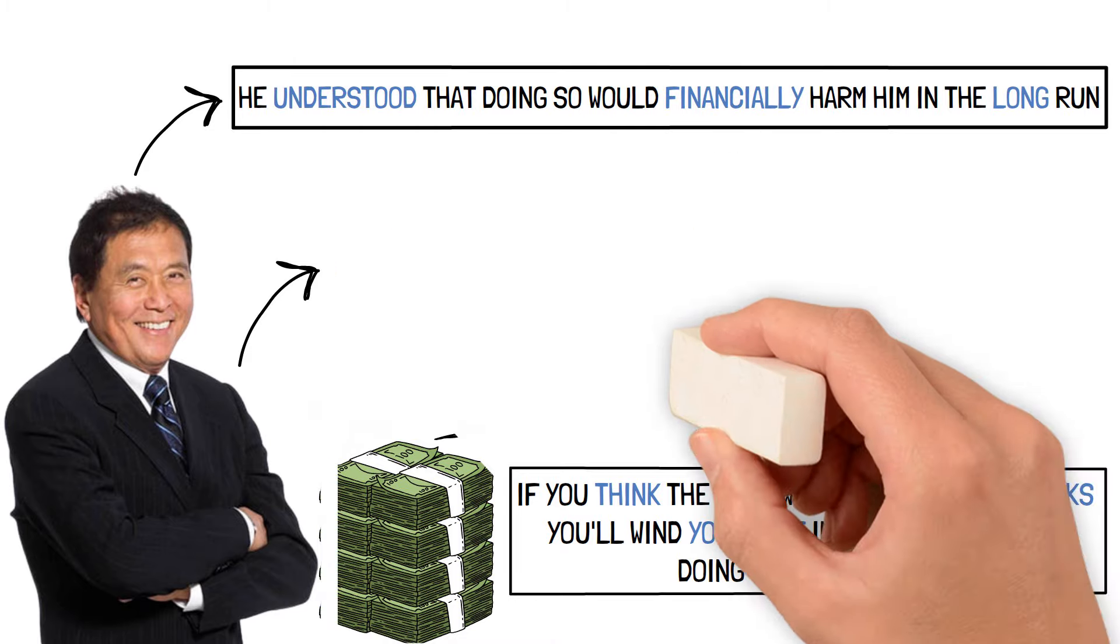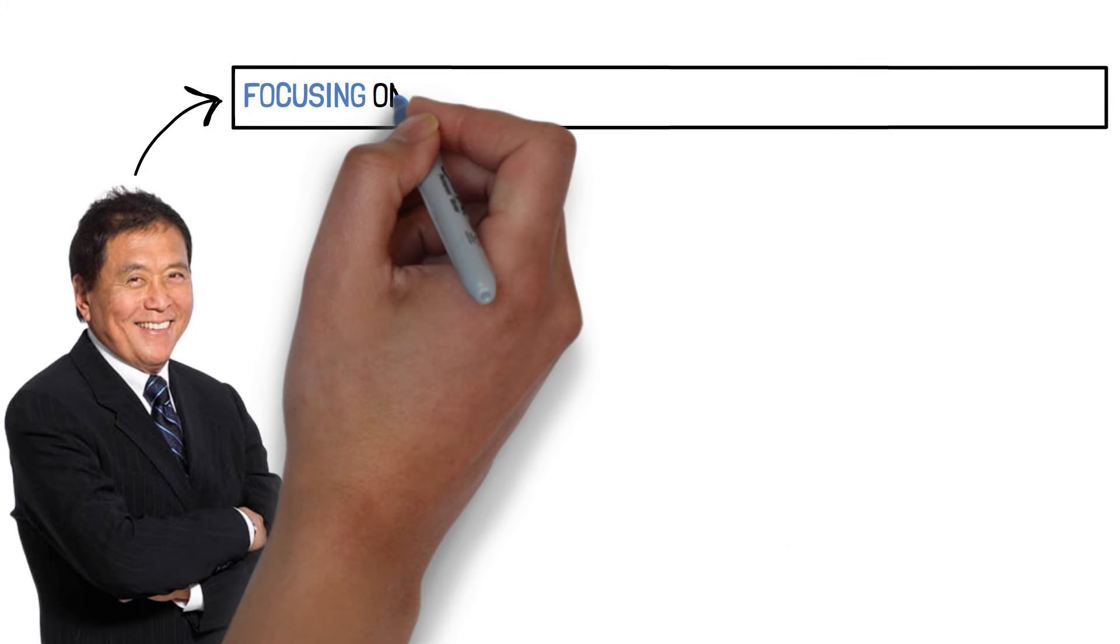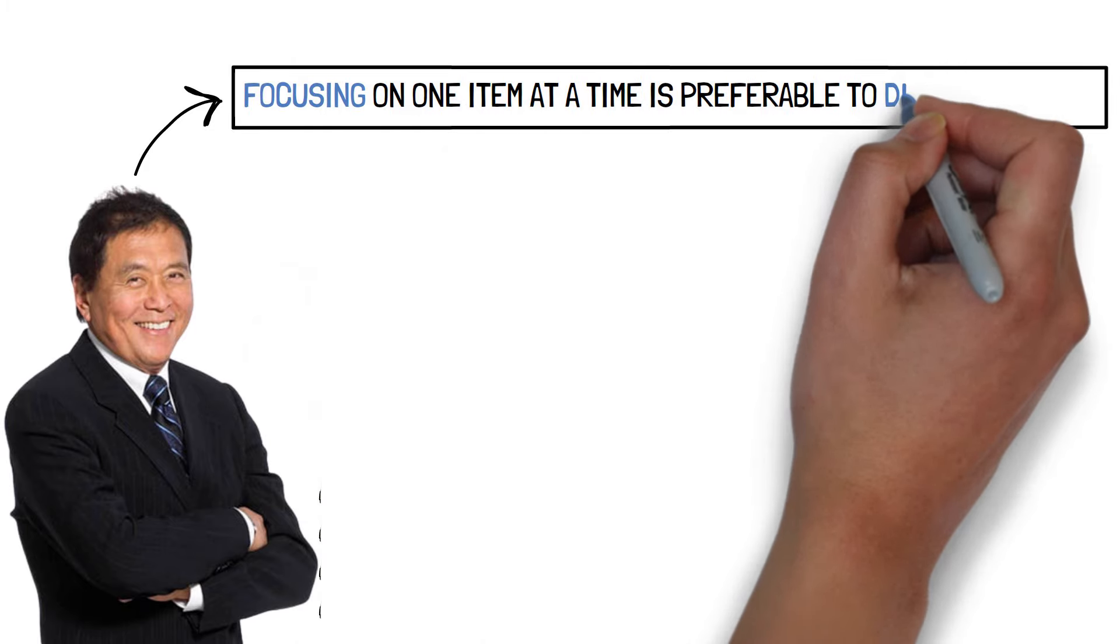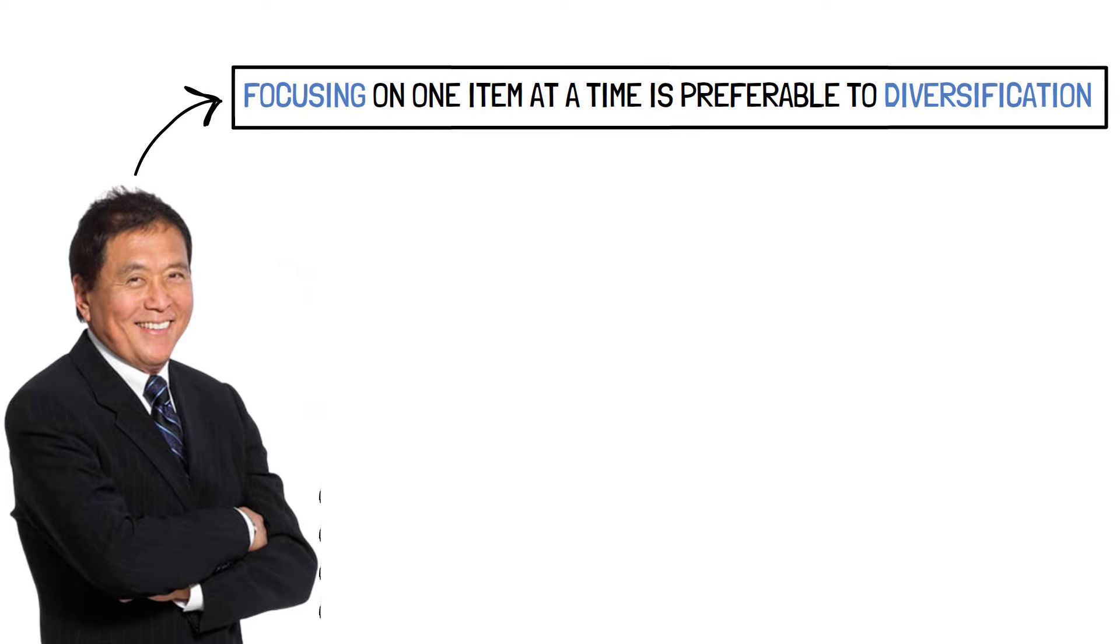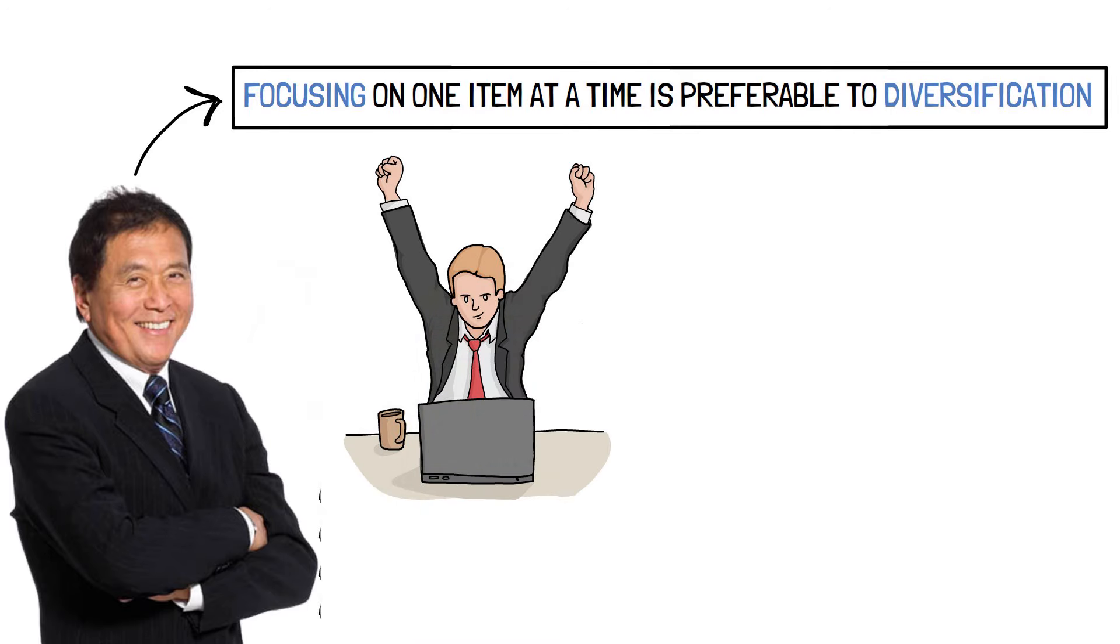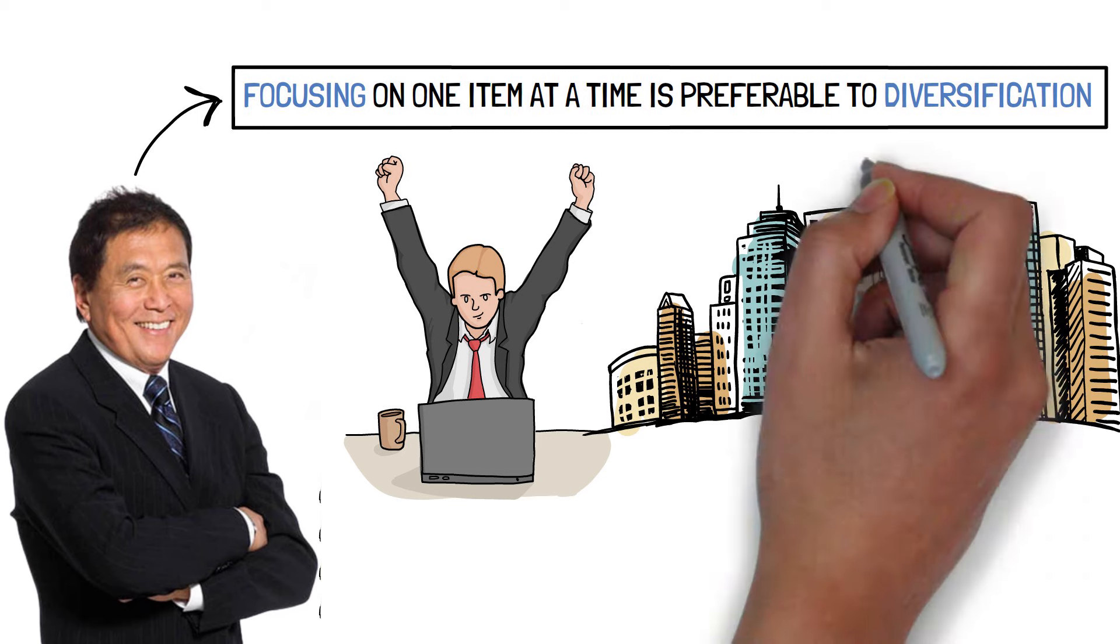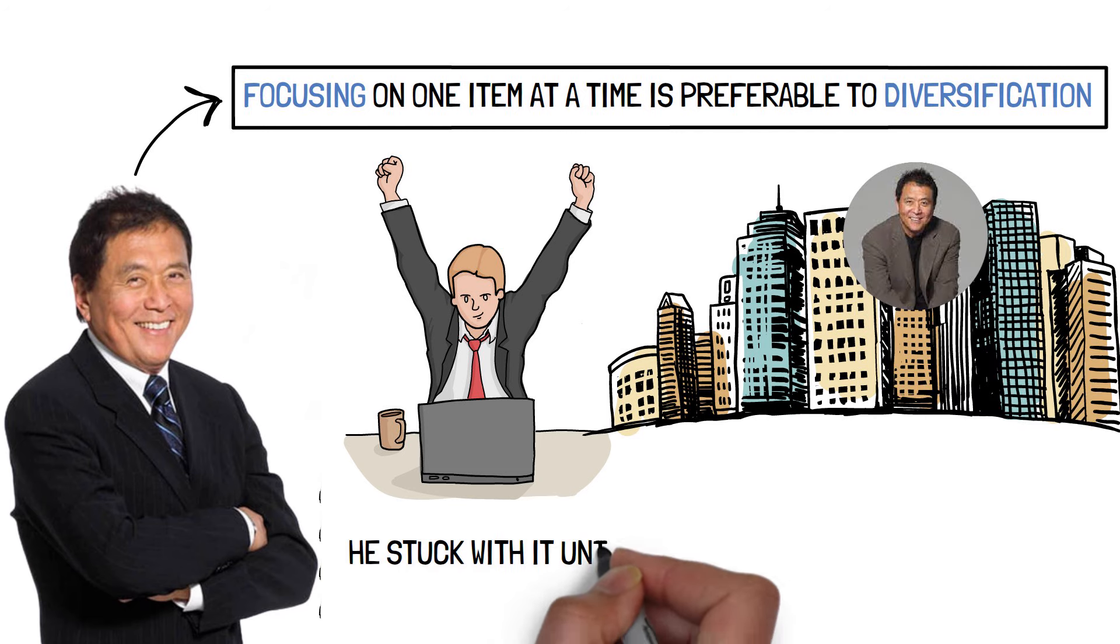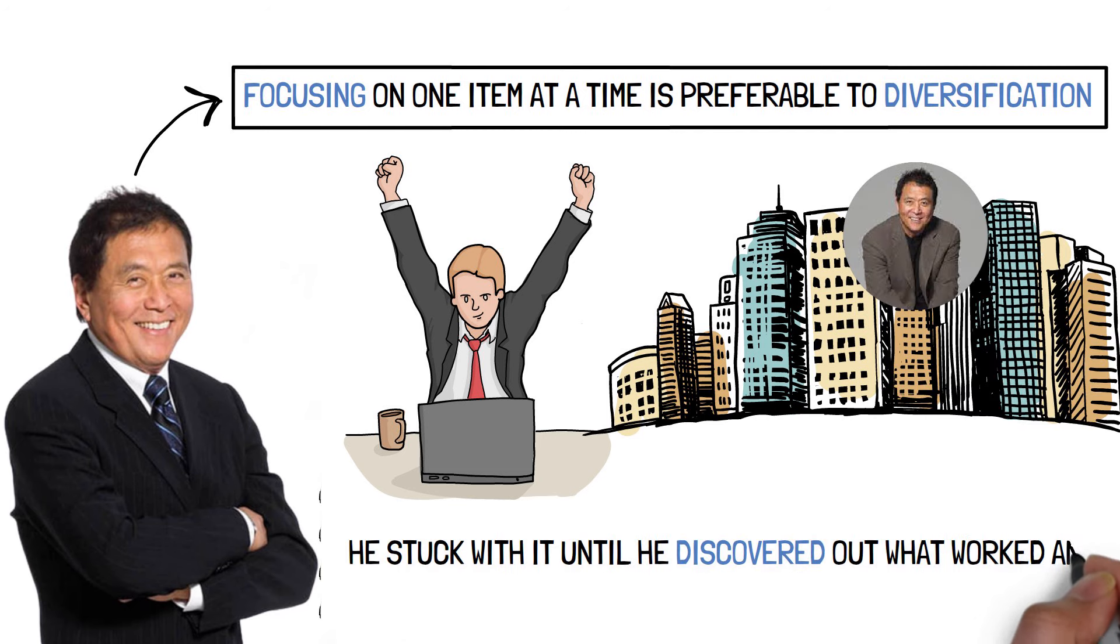Focus. Kiyosaki feels that focusing on one item at a time is preferable to diversification. His FOCUS acronym is Follow One Course Until Successful. When he first got into real estate, he stuck with it until he discovered what worked and what didn't before shifting his focus to something else.